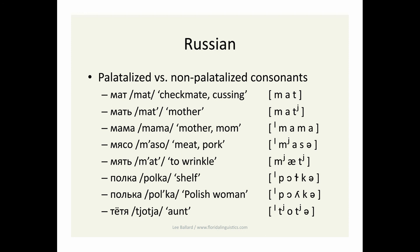Now look at the word 'tjotja.' Both T's are palatalized, and the mid vowel O, which is almost always lax in Russian, between two palatalized consonants is pronounced tense. Let me underline the palatalized consonants with two lines and the non-palatalized ones with one line: mat, mat', mama, myasa, but myac. Polka, polka — but tjotja. Pretty cool, huh?